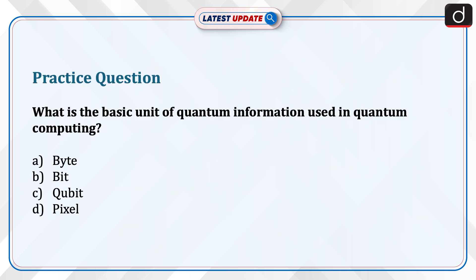Now it's time for the practice question. What is the basic unit of quantum information used in quantum computing? The options are: byte, bit, qubit, or pixel.